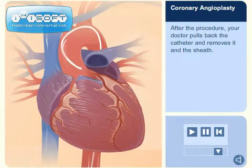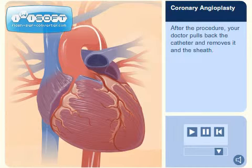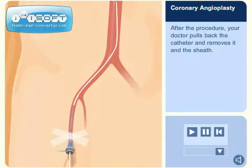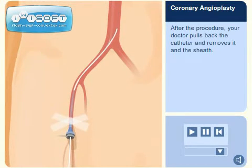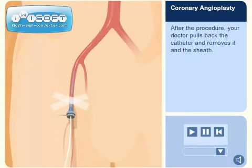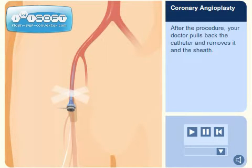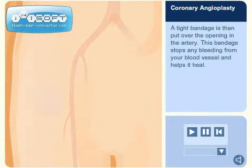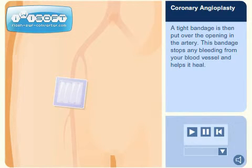After the procedure, your doctor pulls back the catheter and removes it and the sheath. A tight bandage is then put over the opening in the artery. This bandage stops any bleeding from your blood vessel and helps it heal.